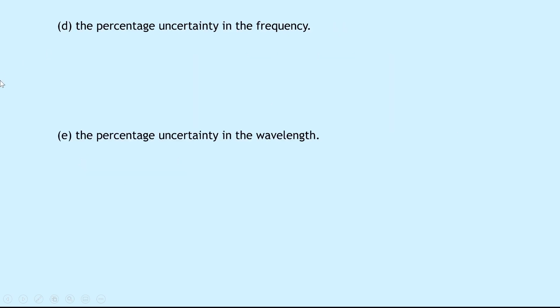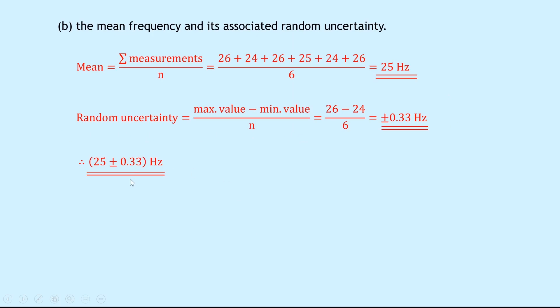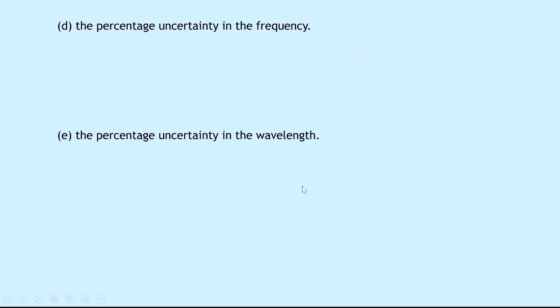Part D says to calculate the percentage uncertainty in the frequency. So to do this, we're going to need our answer to part B. So to get the percentage uncertainty, we're going to take our 0.33 divided by the 25 and times 100, as shown here. So percentage uncertainty equals absolute uncertainty over measurement times 100, which is 0.33 over 25 times 100, which equals plus or minus 1.32%.